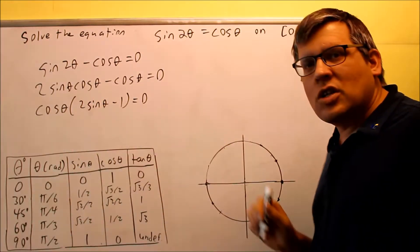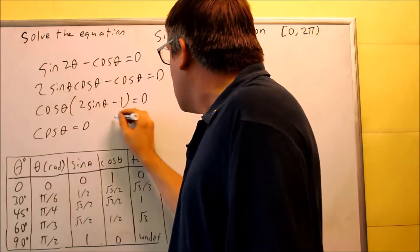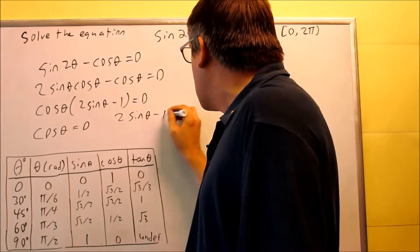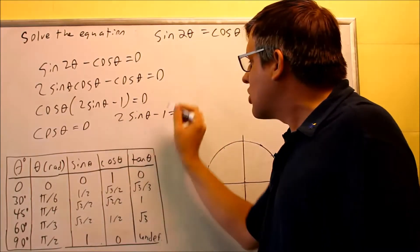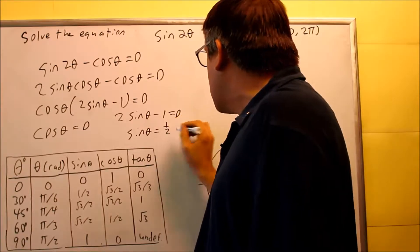And then I'm going to take each of these individually and set them equal to 0. I get cosine theta equals 0, and I get 2 sine theta minus 1 equals 0. If I solve this second one, I get sine theta equals positive 1 half.